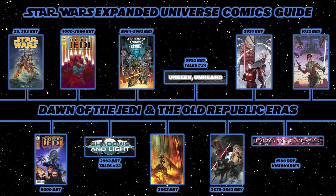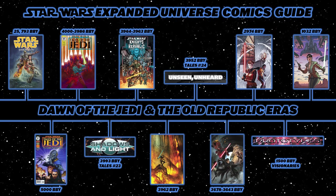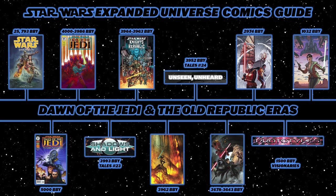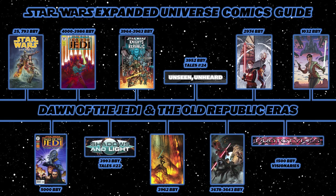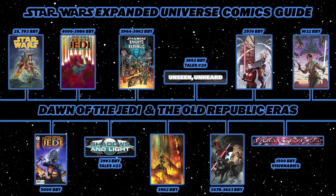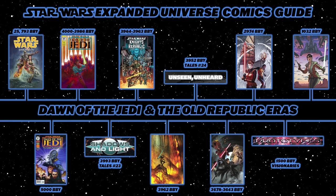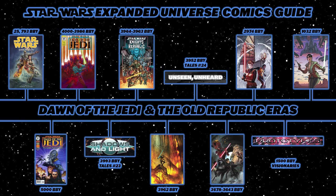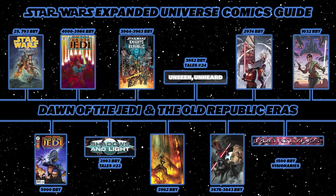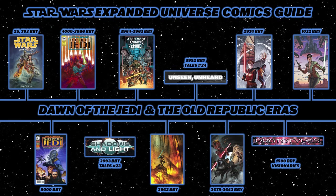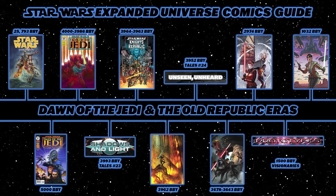After Tales of the Jedi, you'd read the short story Shadows and Light, collected in Star Wars Tales number 22. Next is Knights of the Old Republic, the comic book series — a prequel to the video game set in 3,964 BBY, following Jedi Zayne Carrick, a Padawan framed for the Padawan Massacre.